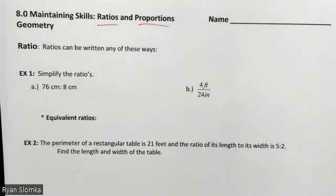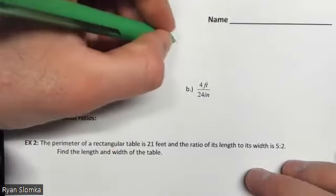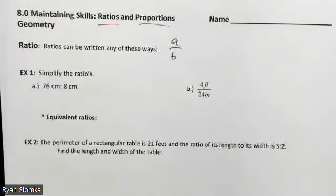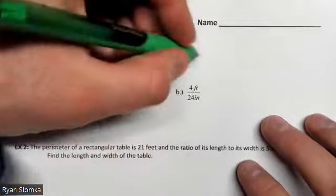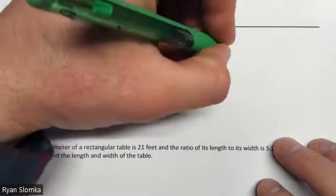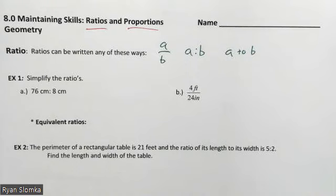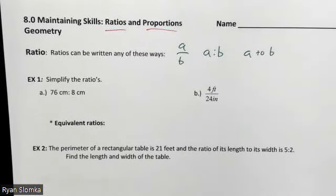We're going to start off with ratios, which are slightly easier, and then bump up to proportions. A ratio is a relationship between two numbers, and it can be written a couple of different ways. My favorite way is to write it as a fraction. Another way is to put a colon between the numbers. You might also hear the word 'to' used between the two numbers — a ratio of two to one, two over one, or two colon one. They're all the exact same.